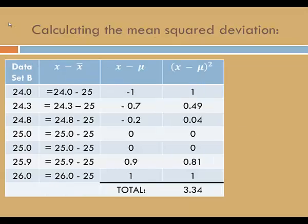The solution is to square the deviations. I've added a column to the table. In the last column, I'm squaring the result of the previous column: negative 1 squared is 1, negative 0.7 squared is 0.49, negative 0.2 squared is 0.04, and so forth. When I total the column of squared deviations, I get 3.34. If I divide this by the population size — in this case 7 — I get 0.4771.